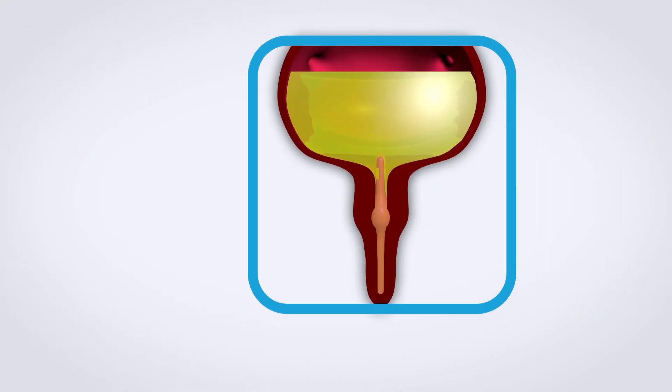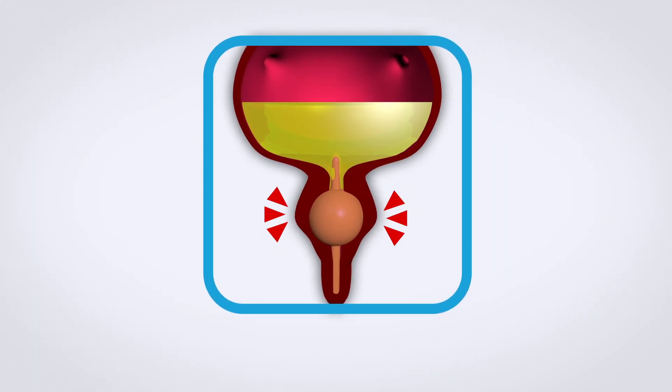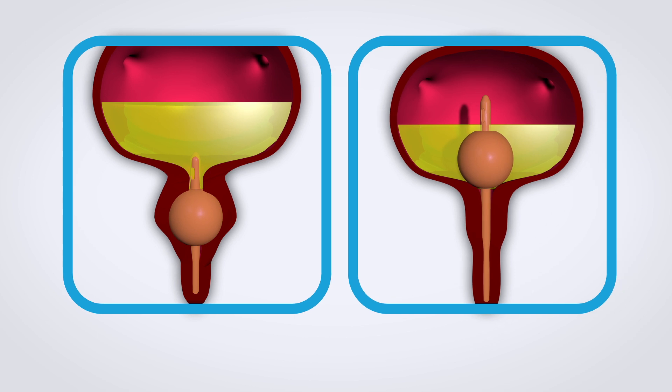The Foley catheter can be accidentally activated inside the urethra or bladder neck, or the balloon can fail to properly deflate, causing serious complications and even death.